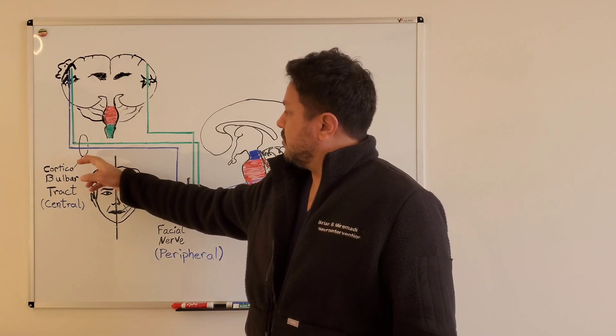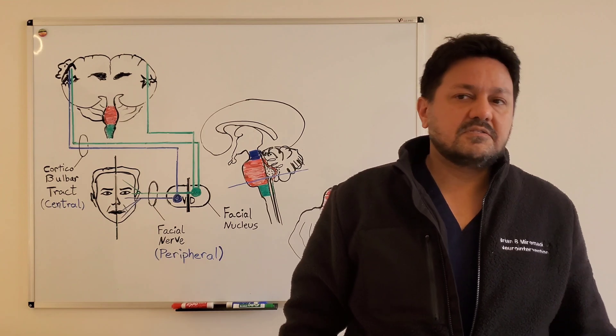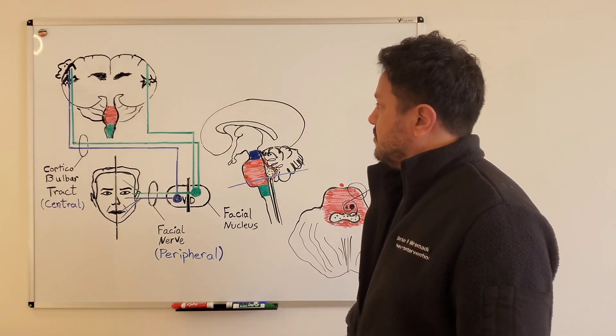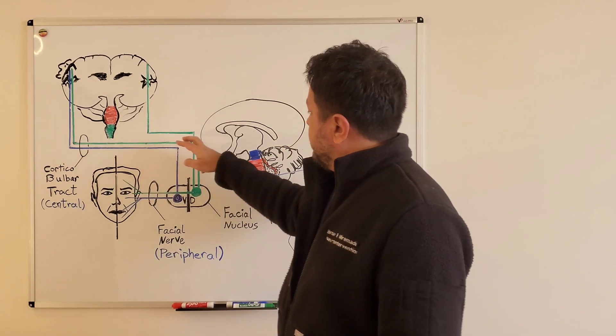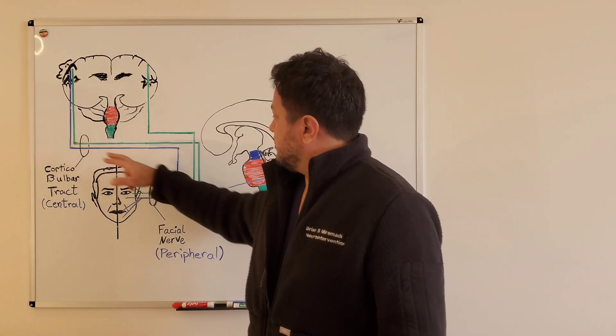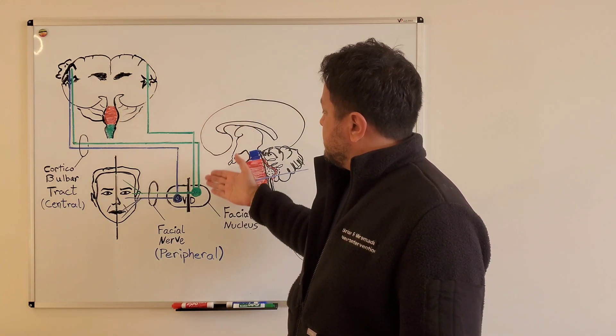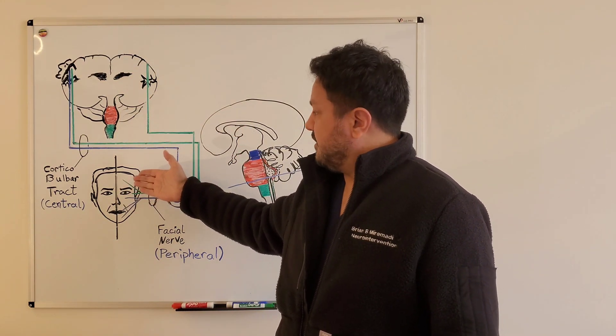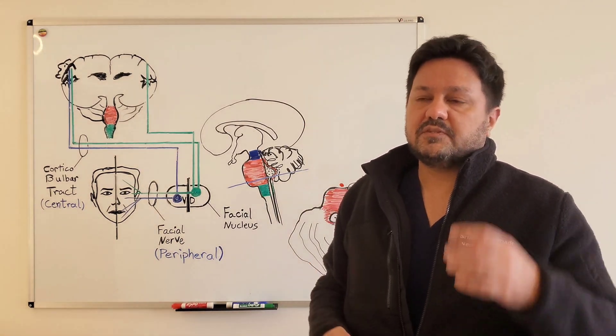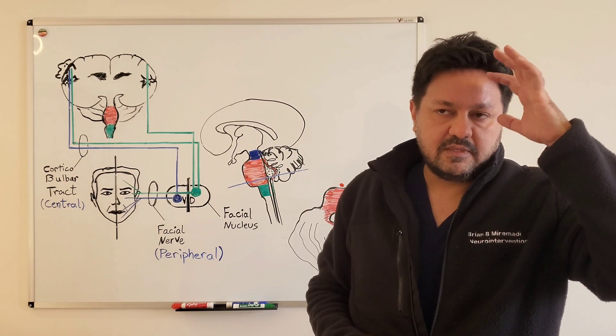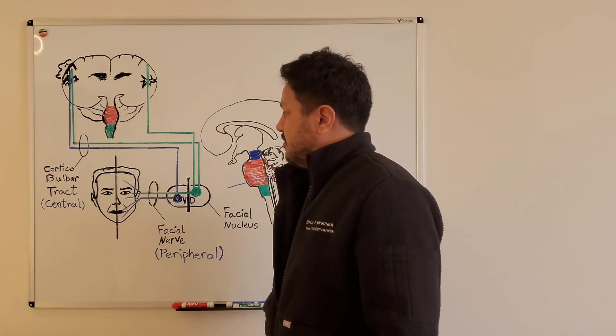But if the corticobulbar tract or the central tract is influenced by a central process, such as a stroke, multiple sclerosis, sometimes a tumor, etc., what's going to happen is the fibers from the ipsilateral cortex will still supply to the upper face on the ipsilateral side. So your patient will present with sparing of the ipsilateral upper face and involvement of the lower face.